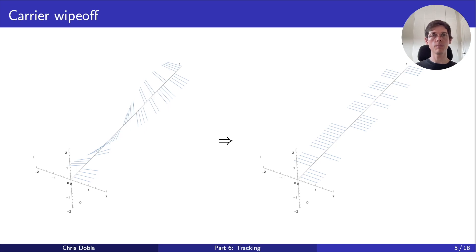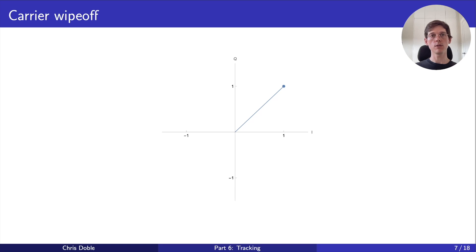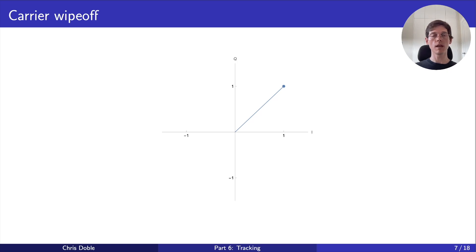If we plot these correlations over time, we should see two clusters — one near the positive I-axis and one near the negative. One of these clusters corresponds to binary zeros of the navigation message and the other to binary ones. However, as we discussed in the sampling video, we don't know which is which. For example, this correlation could be a zero with a phase of 45 degrees, or a one with a phase of negative 135 degrees. Even if we don't yet know how the clusters map to zeros and ones, we can distinguish between them using the sign of each correlation's I component. However, this only works when the correlations lie close to the I-axis. If we didn't undo the rotation caused by the carrier wave's phase, the clusters would remain rotated and this technique wouldn't work.